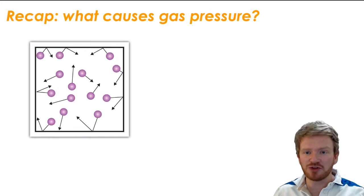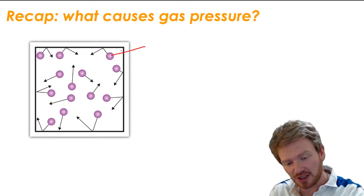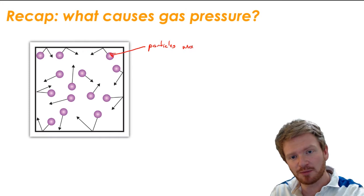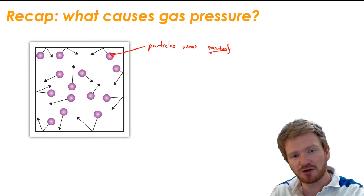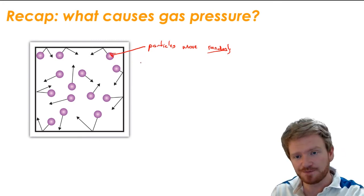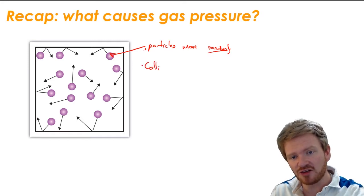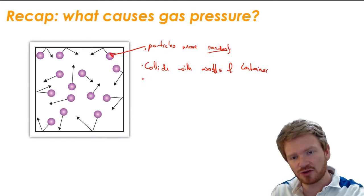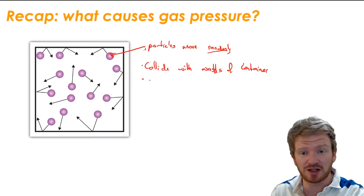So on a quick recap — first thing I want you to do is: can you remember what causes gas pressure? The main cause is we have particles inside a gas, and one of the things that is really important to remember is that they move randomly. That random motion is very very important — something CIE asks about a lot. It doesn't matter so much at IGCSE, but the reason we talk about randomness becomes very important at A-level. As they move randomly, they collide with the walls of their container.